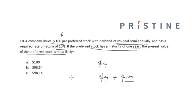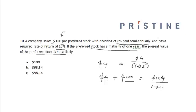The present value of the preferred stock is the present value of the future cash inflows. That will be $4 divided by 1.05, because we are calculating the dividends semi-annually, plus $104 divided by 1.05 squared. Adding all this gives a value of $98.14, so option C is the correct answer.